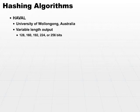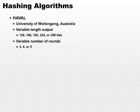It also uses a variable number of rounds, so you can dictate how strong the hashing algorithm actually is by using three, four, or five rounds of computation. And of course, the more rounds, the more intense the computation and the slightly slower it's going to be.